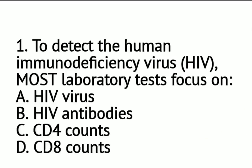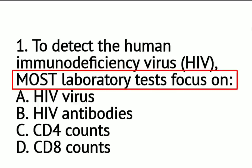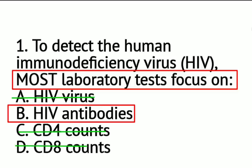Question number 1: To detect the human immunodeficiency virus or HIV, most laboratory tests focused on: A. HIV virus, B. HIV antibodies, C. CD4 counts, or D. CD8 counts. The screening tool used to detect HIV is the enzyme immunoassay, or ELISA or EIA. This test is used to detect the presence of antibodies of HIV. So what ELISA or EIA detects is the presence of your HIV antibodies. In order to determine if HIV is present, the test must detect the antibodies to the virus itself, not the virus itself.